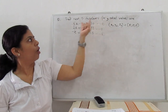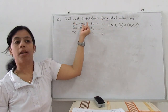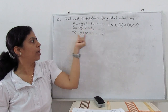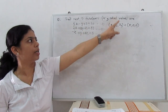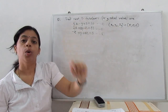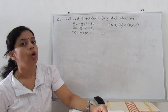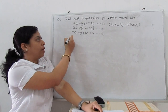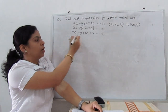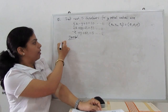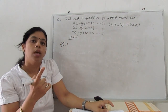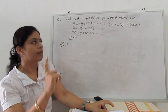The question is: find the next five iterations for the system — 5x minus y plus z equals a given value, 2x plus 8y minus z equals another value, and a third equation — where the initial values are x₀ = 0, y₀ = 0, z₀ = 0. Solve with the Jacobi method.